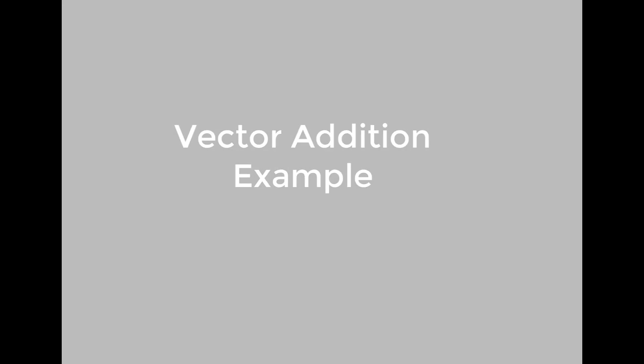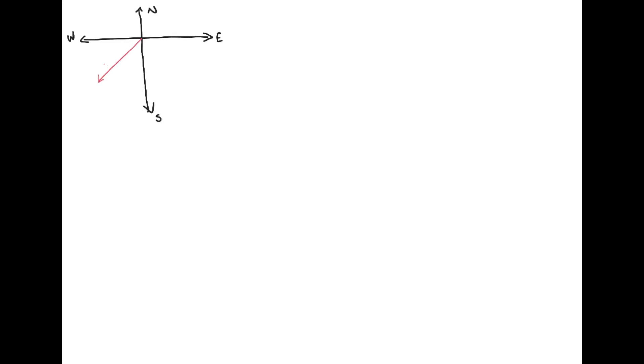Here's the problem. Imagine a boat travels two miles due southeast and then makes an abrupt turn and travels three miles in a direction that's 60 degrees east of south. East of south is a weird sounding direction, but the meaning of that is that if you point straight south and then turn 60 degrees toward the east, you'll be pointing east of south.